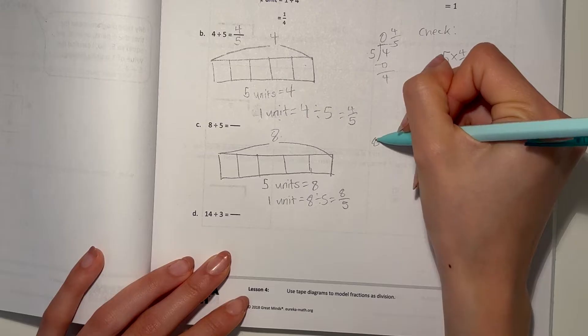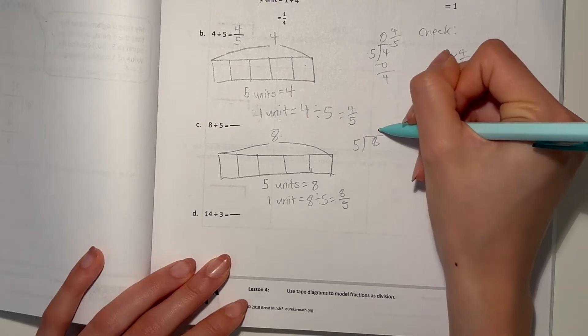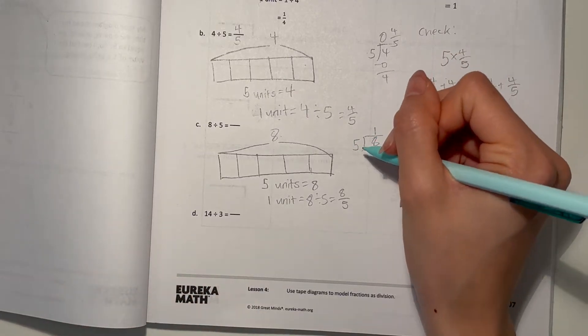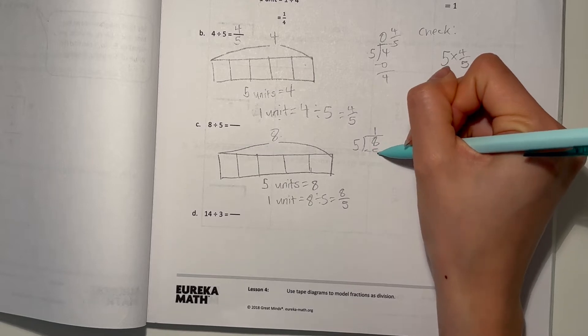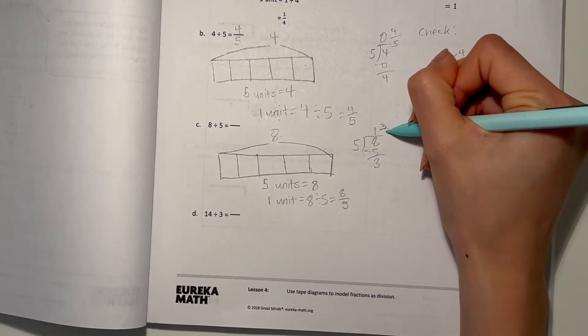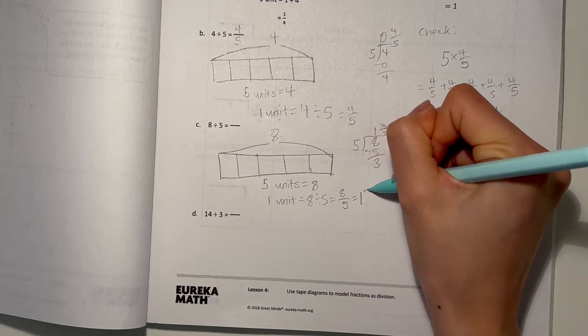Long division, 8 divided by 5. 5 goes 1 time into 8, minus 5, 3 left over. So 1 and 3 fifths. You can also write that here.